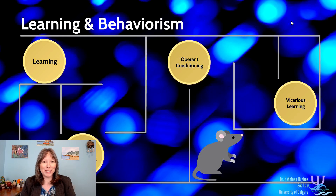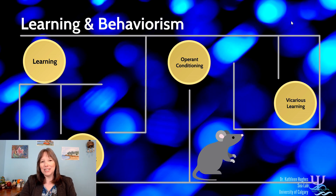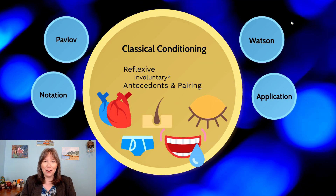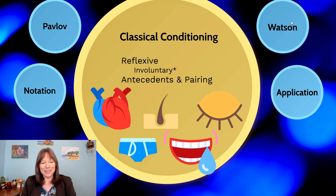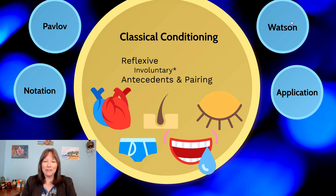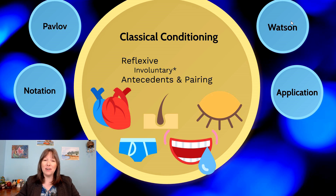Now that we did a brief introduction into learning, we're going to talk about one type of conditioning: classical conditioning. This is also sometimes called Pavlovian conditioning or reflexive conditioning. The reason for these different names is that it was originally founded by Ivan Pavlov, and it refers to our involuntary autonomic reflexes.